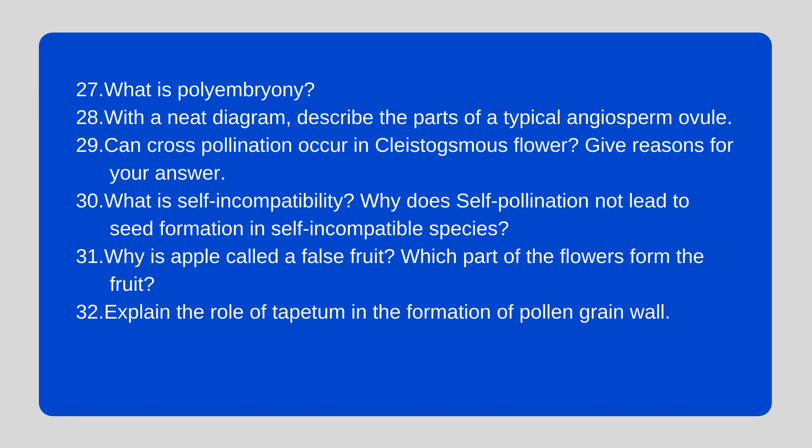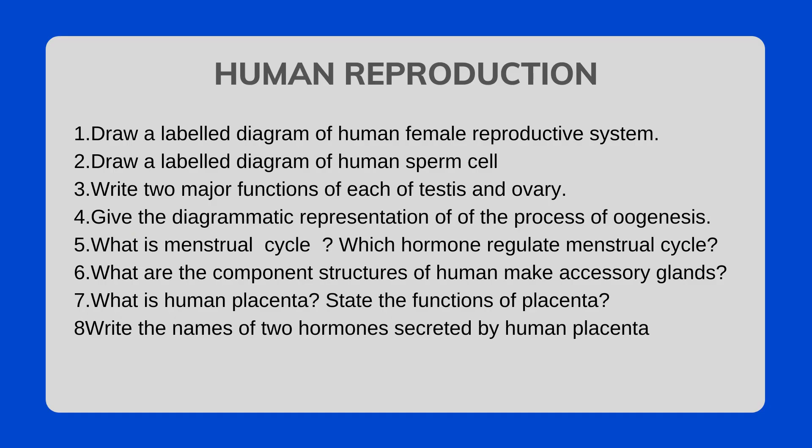Explain the role of the tapetum in the formation of the pollen grain wall. Human Reproduction: Draw a labelled diagram of the human female reproductive system. Draw a labelled diagram of a human sperm cell. Write two major functions of each of the testes and ovary. Give the diagrammatic representation of the process of oogenesis.